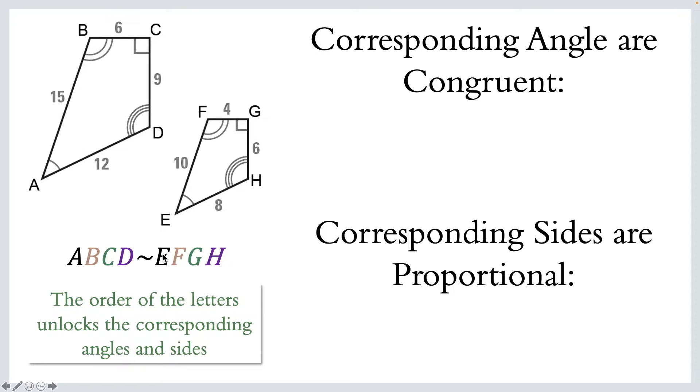So A corresponds to E. And if you look at the figures, A and E both have one arc. So those are congruent, as are B and F, C and G, and D and H.